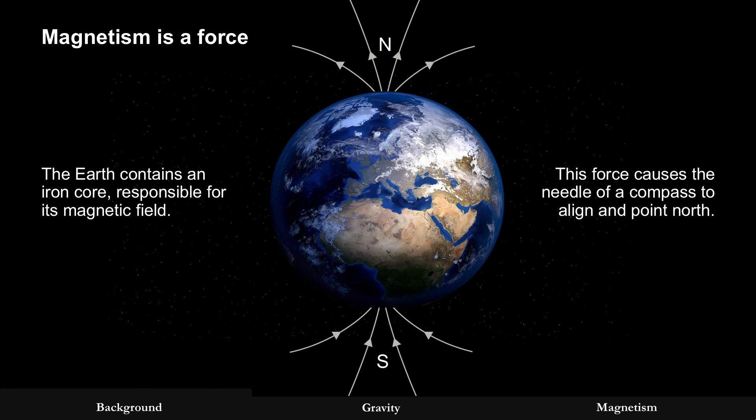Magnetism, that's also a force. Now within the earth, the earth contains an iron core, and it's responsible for its magnetic field. And what's a force? A force has the ability to move objects. And so think about the compass, and that force causes the needle of a compass to align with a magnetic field and point north.